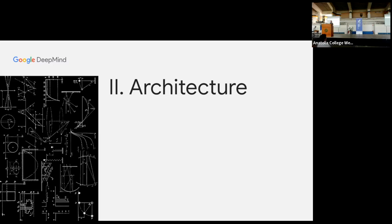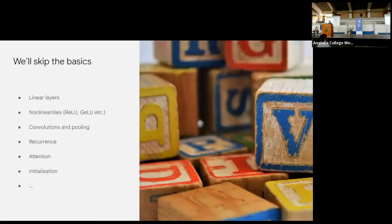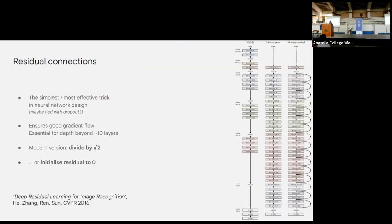Now let's talk about neural network architectures. I'm skipping the basics — linear layers, non-linearities, convolutions, pooling, recurrence, and attention — and won't go deep on initialization. The key heuristic for initialization is to preserve unit variance: assume your input is unit variance and initialize weights so that all intermediate activations preserve that, ensuring numerical stability during training.